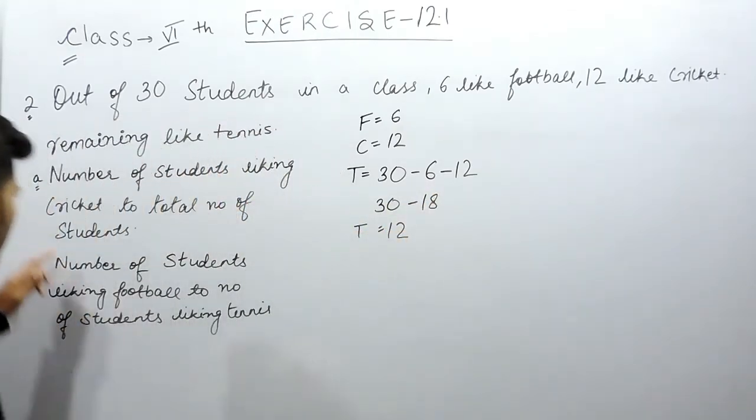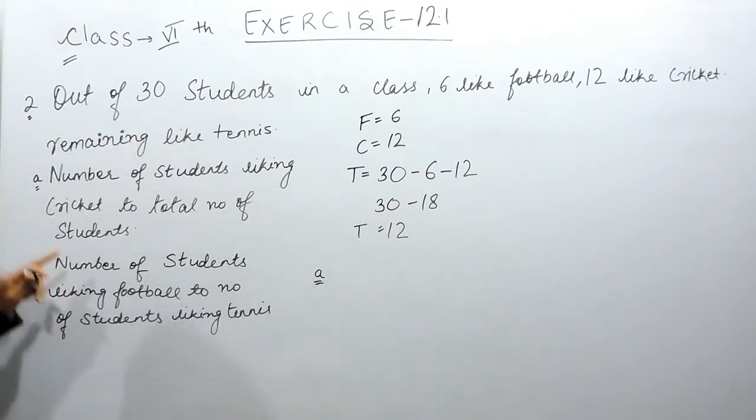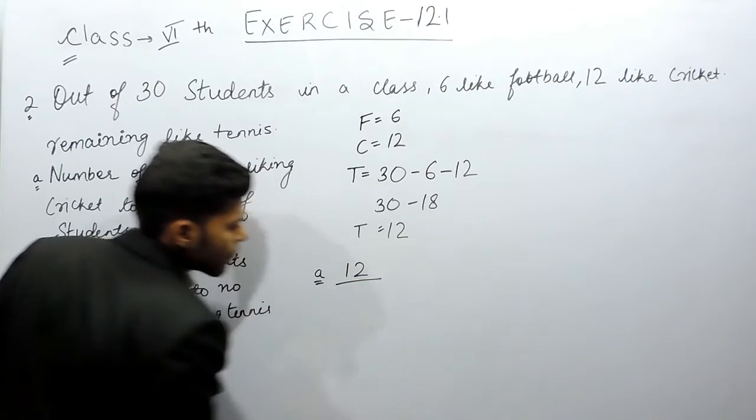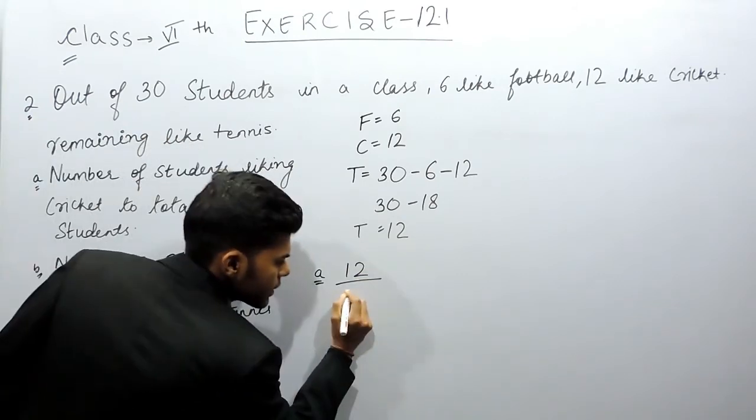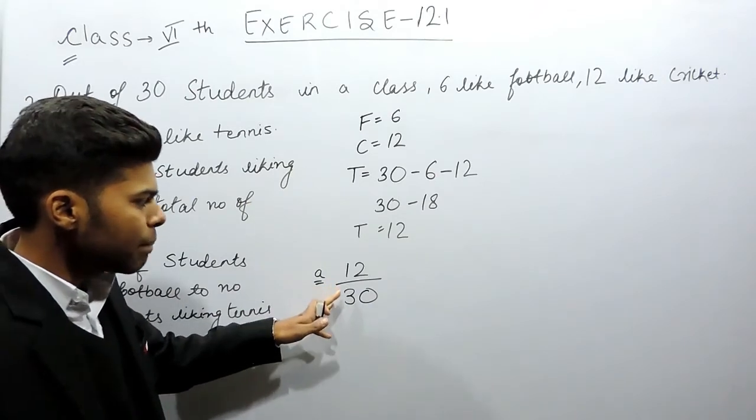So now we will do part 1. Part 1 says number of students who like cricket to the total number of students. So number of students liking cricket is 12, the total number of students is 30. As I told you, the ratio has to be in its simplest form.